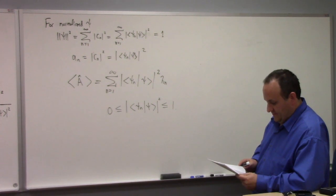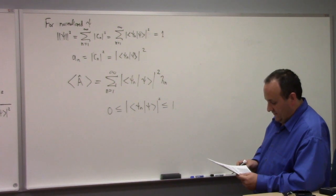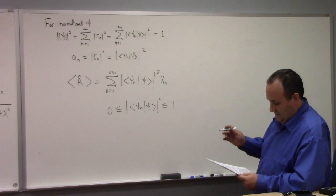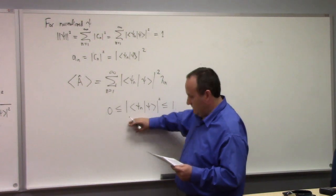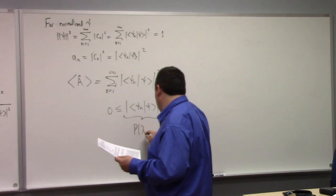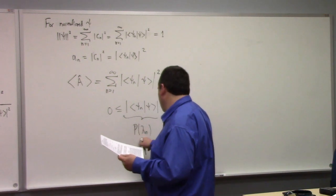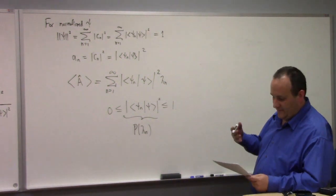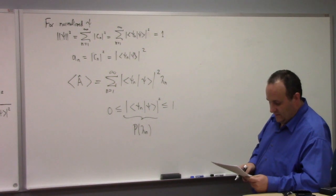Which is an observable operator a hat has eigenbases psi_n with corresponding eigenvalues lambda_n. Then the probability that the measurement will yield eigenvalue lambda_n of a hat of the system and the normalized state psi of x is literally this thing right here. This is the probability that you observe a lambda_n in this situation.